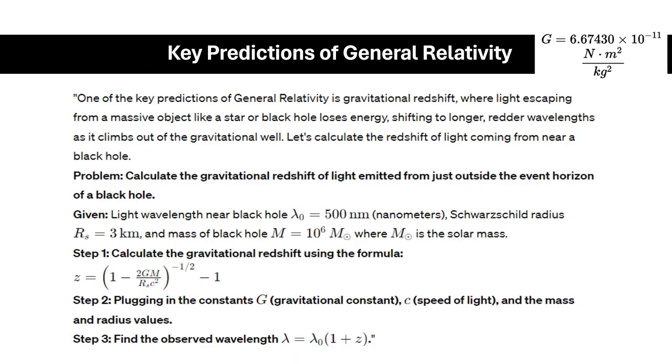One of the key predictions of General Relativity is gravitational redshift, where light escaping from a massive object like a star or black hole loses energy, shifting to longer wavelengths as it climbs out of the gravitational well. Let's now have a sample calculation for this redshift.